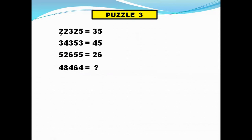See 2 is a repeated number. We have 2 three times. We cross out 2 and we get the number 35. Here we have 3 as the repeated number. So we cross out 3 and we get the number 45. Here similarly we cross out 5 and we get the number 26.